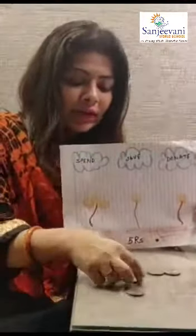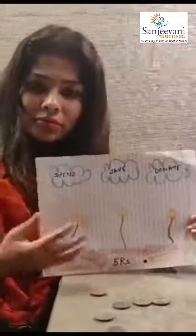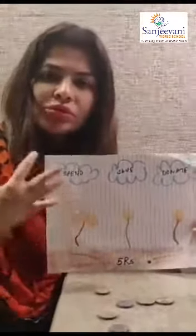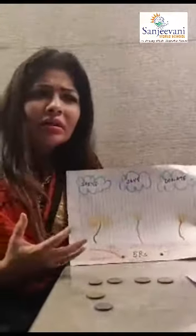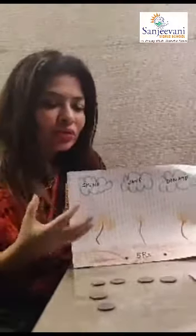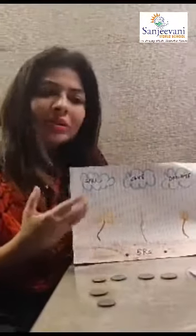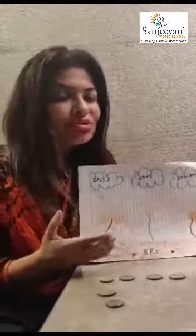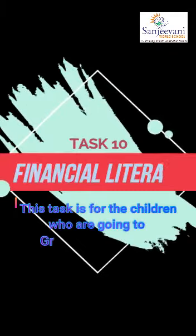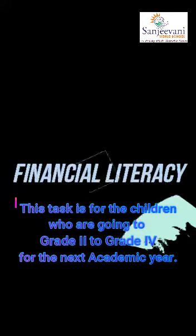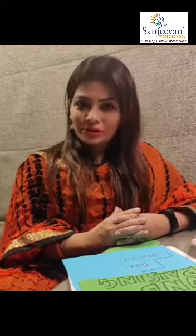If I give them, say, 5 rupees, let the child decide how much they want to spend, how much they want to save, and how much they want to donate. Let the child be as creative as possible. What I have done is the child has to do a crayon rubbing activity. I have made a plant. On the plant, I wish to spend 3 rupees, so I take a 1 rupee coin and start rubbing the coin to get the imprint. So I have spent 3 rupees, saved 1 rupee, and donated 1 rupee.